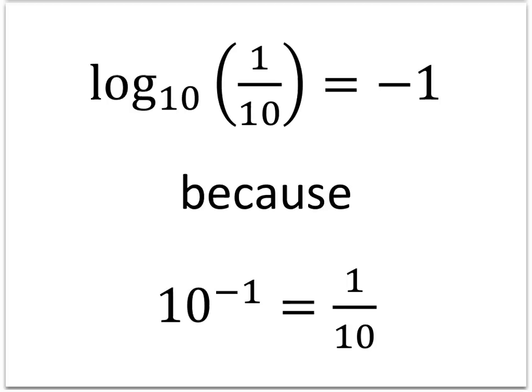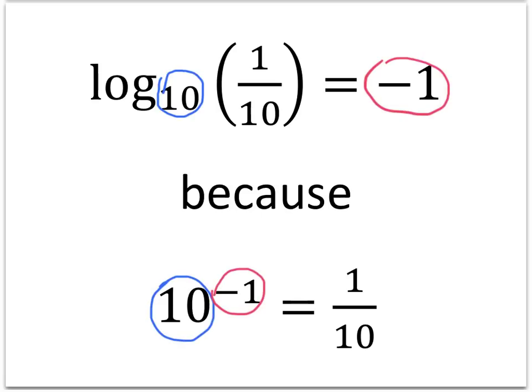The log base 10 of 1 tenth is negative 1 because 10 to the negative 1 is equal to 1 over 10. Remember that negative exponents give us those fractions. Let's trace through our numbers: the base of the logarithm is the base of the exponential expression, the value of the logarithm is the exponent, and the number inside the logarithm is the value of the exponential expression.